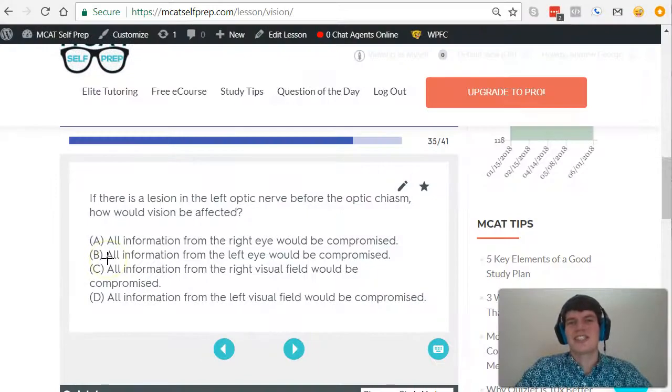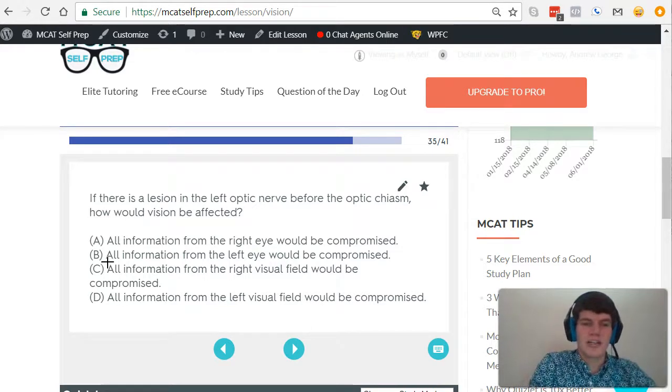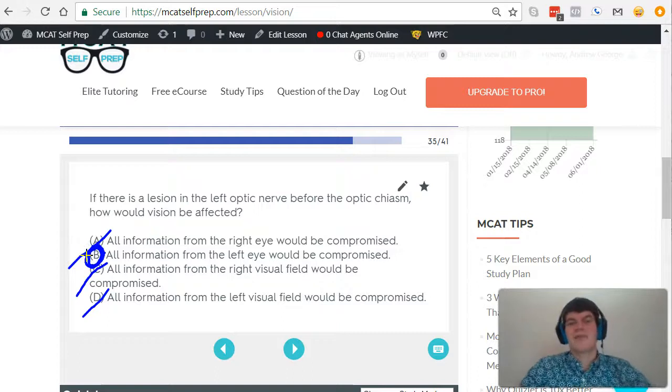Taking a second look at the question stem, they're asking: if there's a lesion in the left optic nerve before the optic chiasm, how would vision be affected? Remember, both visual fields are getting affected, so we can cross out C and D. It's not the right eye that's being affected—it's the left eye. All the information from that left eye is being compromised.